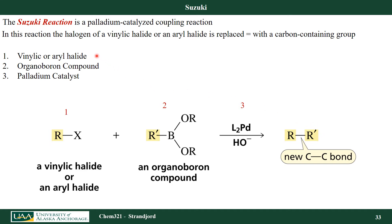I need three things for this chemical reaction. First, I need either a vinylic or aryl halide, number one. I need an organoboron compound, number two — here's the organo part and here's the boron part of the molecule. And I need a palladium catalyst, number three. Here I have palladium with two ligand groups attached to it. Ligand groups, as you might remember from general chemistry, are just groups attached to the central atom of an organometallic compound or attached to a metal.